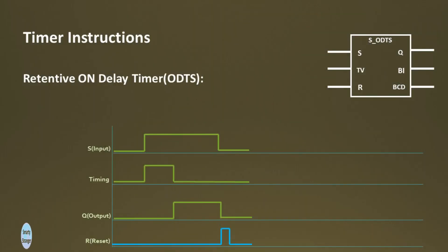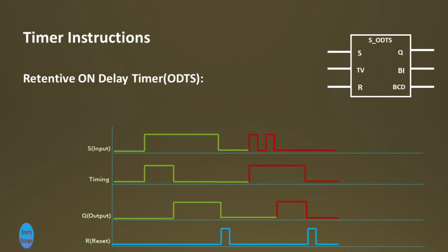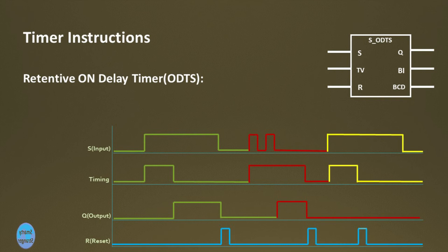Let's understand the Retentive On Delay timer via trends view. In the first cycle, if there is a positive edge at S input, the timer starts its timing, and when it completes its defined timing, output Q starts giving 1 or high. In the second cycle, if there is fluctuation on S input — meaning input changes from 1 to 0 or 0 to 1 — before time elapsed, the timer resets to its predefined value, remains in running condition, and completes its timing. In the third cycle, if input R changes from 0 to 1 while the timer is running, the timer resets immediately.